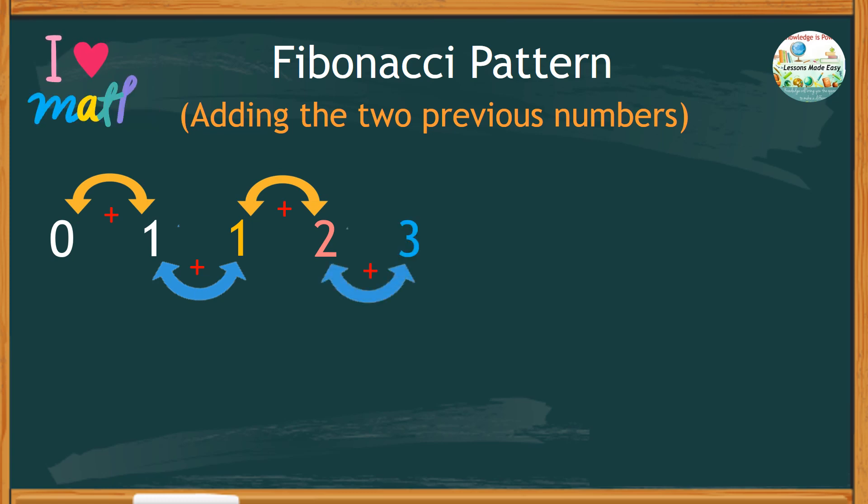2 and 3 gives us 5. 3 and 5 would give us 8. 5 and 8 is 13. And combining 8 and 13 will get 21.